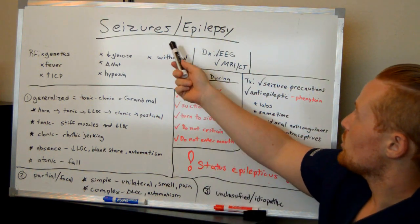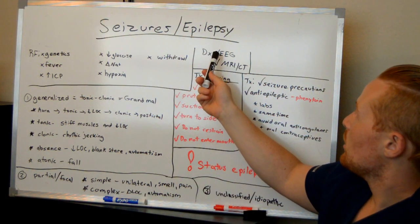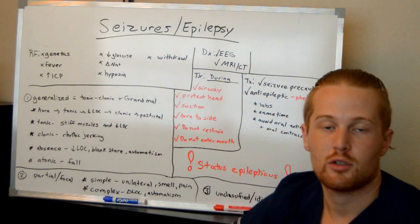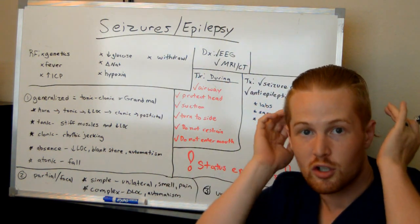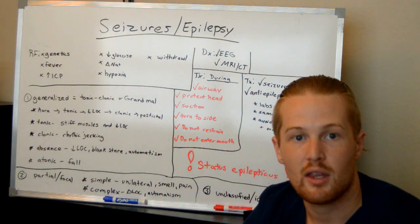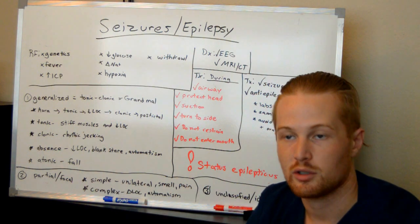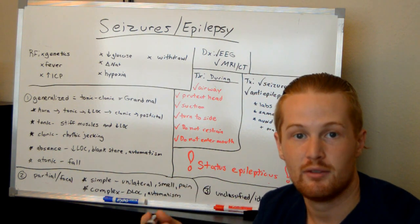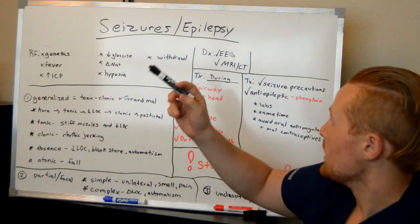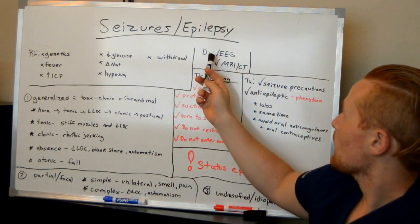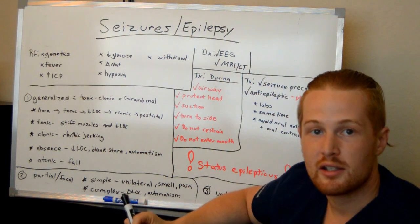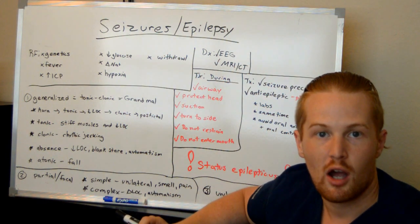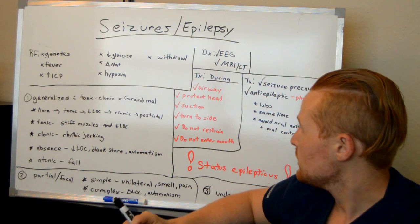For diagnosis of seizures, you can do an EEG, where electrodes are placed on the head to look at electrical activity in the brain. You can also do an MRI and a CT scan to see if there's a cause for the abnormalities.